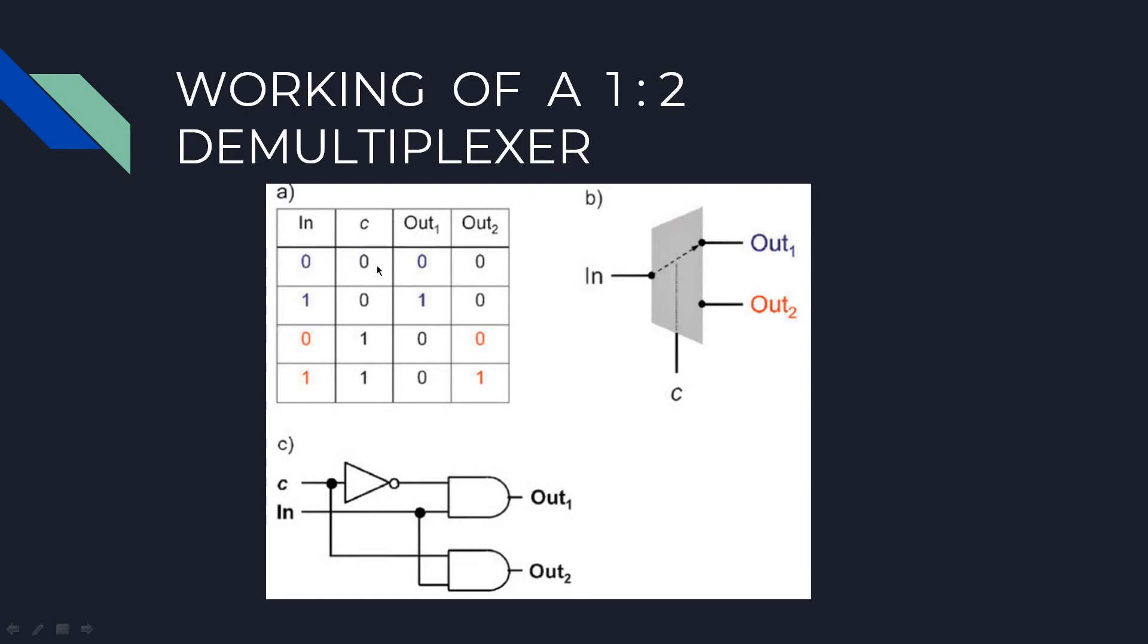When your selection line is 0, your input In is going to output 1. As you can see, if your input In is 0 or 1, your output is also 0 or 1.